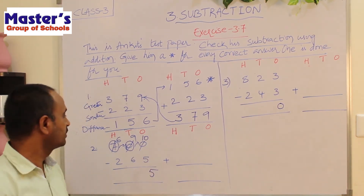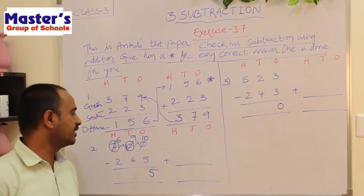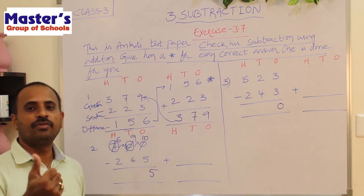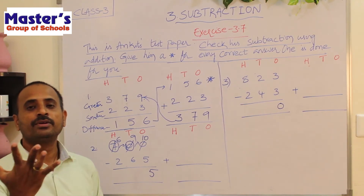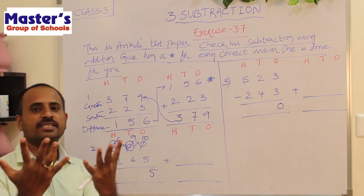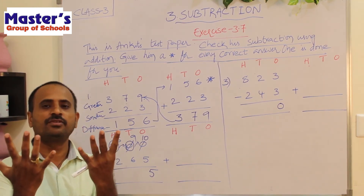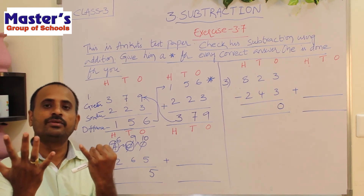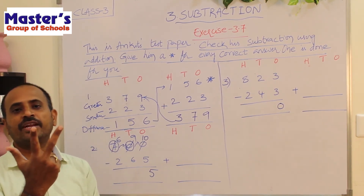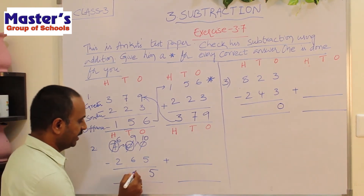Go to tens place: 9 and 6 are present. Open 9 fingers, close 6 fingers: 1, 2, 3, 4, 5, 6. There are 3 fingers remaining. Write 3 in tens place.